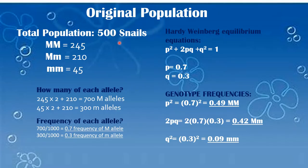We have 500 snails in our original population, and this is how they are split up by genotype. There are obviously double the alleles compared to the population size. That is how you calculate the big M's and the little m's. And then to find the frequency of each allele, you take the number of alleles you have divided by 1,000, which is the total number of alleles in the population.